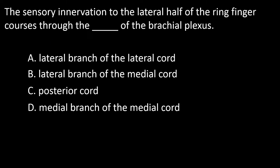Next question: the sensory innervation of the lateral half of the ring finger courses through which part of the brachial plexus? A: lateral branch of the lateral cord, B: lateral branch of the medial cord, C: posterior cord, D: medial branch of the medial cord.